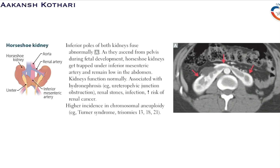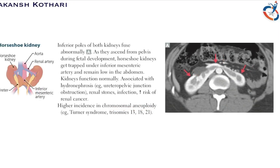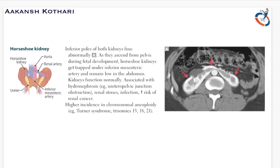The basic causes of horseshoe kidney include genetic defects — chromosomal aneuploidy syndromes such as trisomy 13, 18, and 21. On the right-hand side we have an X-ray of the abdomen showing horseshoe kidney.